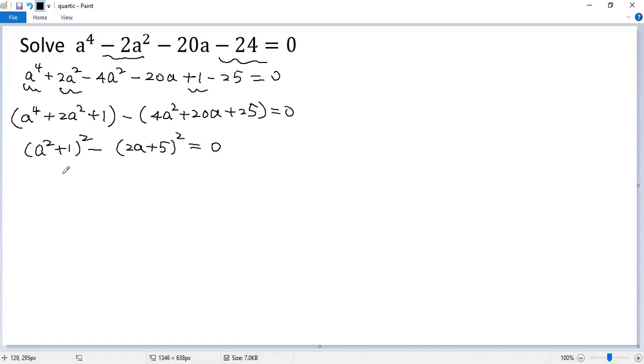Then we use difference of squares formula: a minus b times a plus b. So we get a squared plus 1 minus 2a plus 5, then times a squared plus 1 plus 2a plus 5 equals 0.